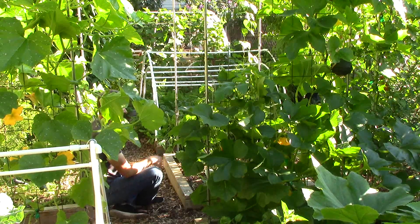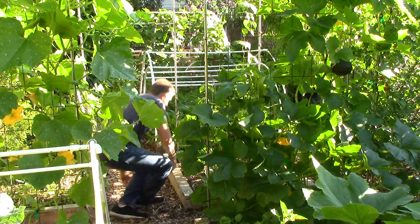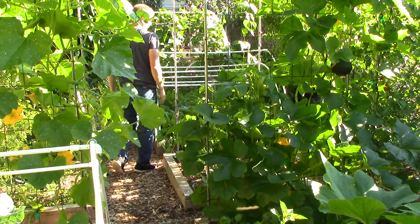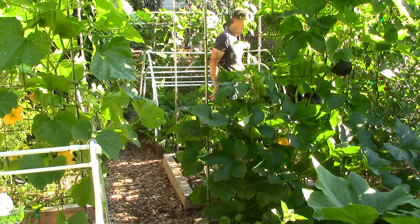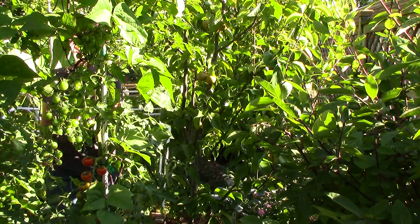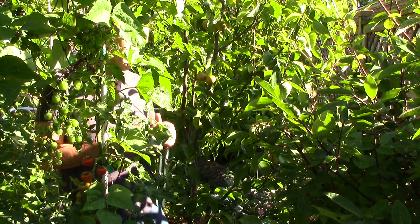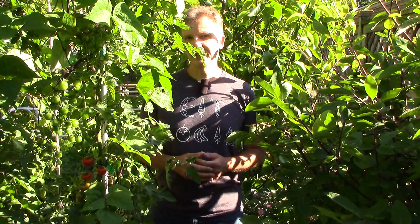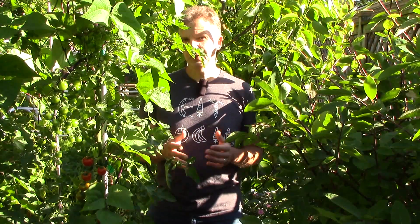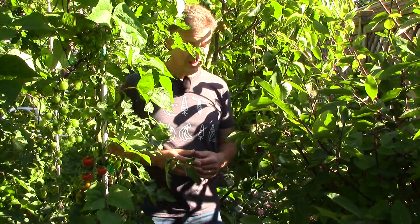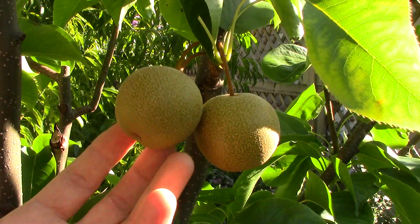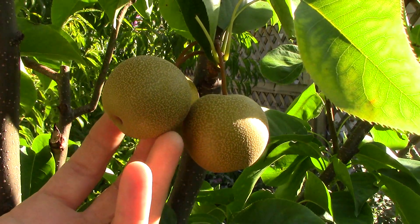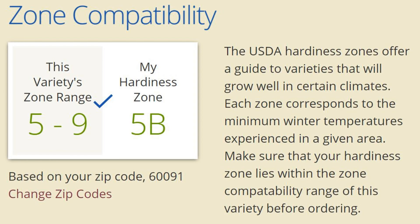Because zones are based on average annual minimum temperatures, they give you a good idea of what plants will survive winters in your zone. This information is especially helpful when purchasing perennials, and I would never invest in a new perennial without first learning its zone compatibility, which is usually provided by the seller. For example, when I bought this Asian pear tree, I first confirmed that this variety is hardy to zone 5, which simply means it should survive zone 5's average minimum temperature range of negative 20 to negative 10 Fahrenheit.